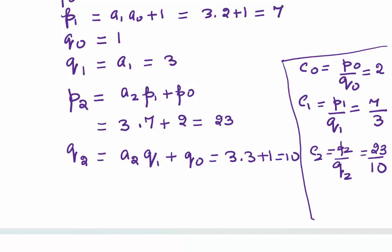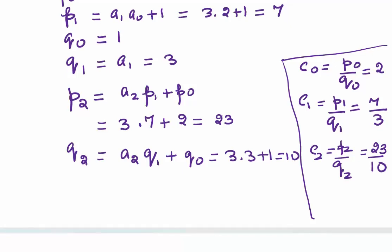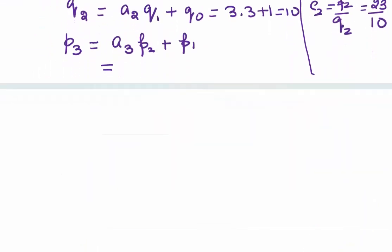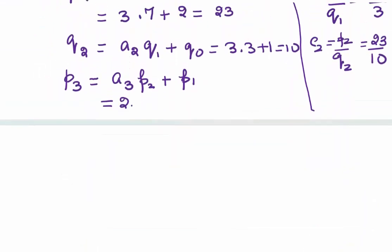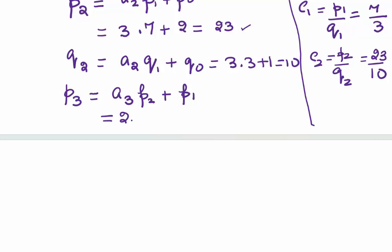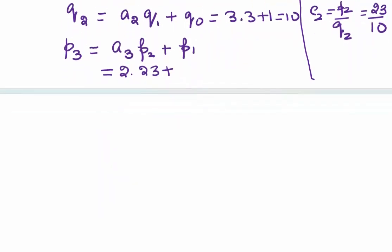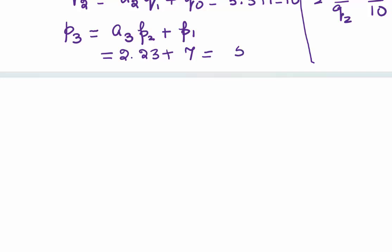Our C3 will be nothing but the original ratio or the quotient. But still, let's check using the formula. For that I need P3. P3 = a3·P2 + P1. This will be a3, which is 2, times P2, which is 23, plus P1, which was 7. This gives us 53.